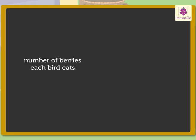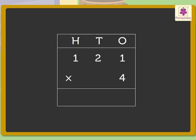To find the answer, we have to multiply the number of berries each bird eats — that is 121 — with the total number of birds, that is 4. First, we write the numbers in the place value chart, then begin with multiplying the digit in the ones place with the multiplier. Thus, 1 into 4 is equal to 4. Write 4 in the ones column.